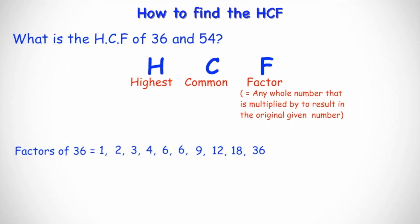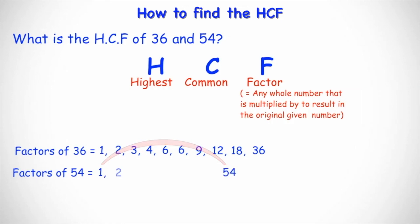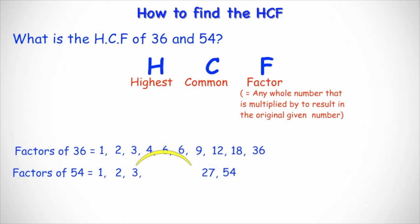Similarly, we find all the factors for 54. So we start with 1 and 54. Then going up the list: 2 goes into 54 — half of 54 is 27, because 2 times 27 equals 54. Does 3 go into 54? Yes — 54 divided by 3 is 18, so 3 times 18 is 54. Does 4 go into 54? No, because 54 cannot be divided exactly by 4. Similarly, 54 cannot be divided exactly by 5. Can 6 go into 54? Yes — 54 divided by 6 is 9, because 6 times 9 equals 54. And that's the highest we can go.